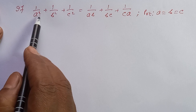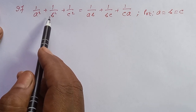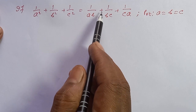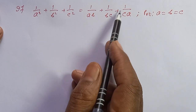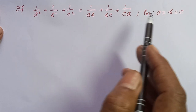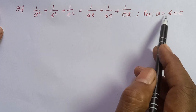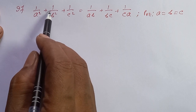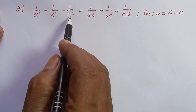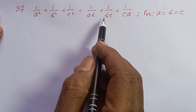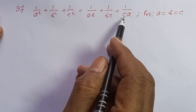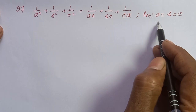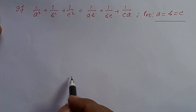If 1 by a square plus 1 by b square plus 1 by c square equals 1 by ab plus 1 by bc plus 1 by ca, then prove that a equals b equals c.